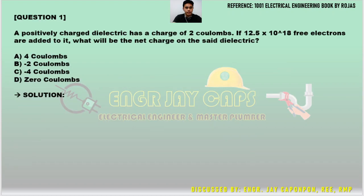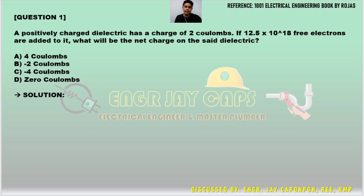Let's proceed with question number one: A positively charged dielectric has a charge of 2 coulombs. If 12.5 times 10 to the 18 electrons are added to it, what will be the net charge of the said dielectric? We are looking for the net charge.